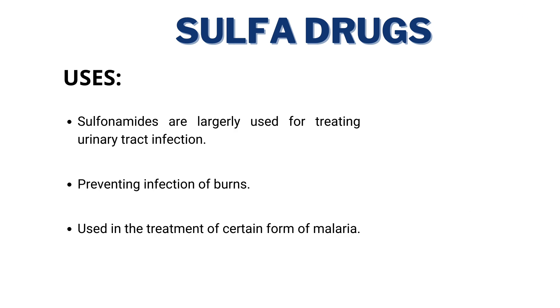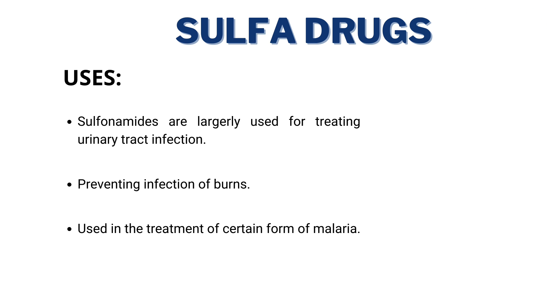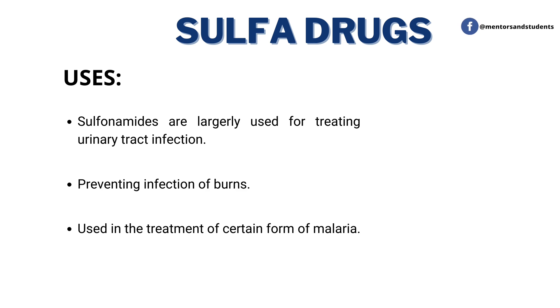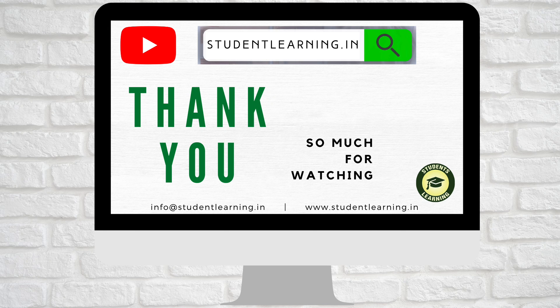Let's now talk about the uses of sulfa drugs. They are largely used for treating urinary tract infections, preventing infection of burns, and used in the treatment of certain forms of malaria. Thank you so much for watching.